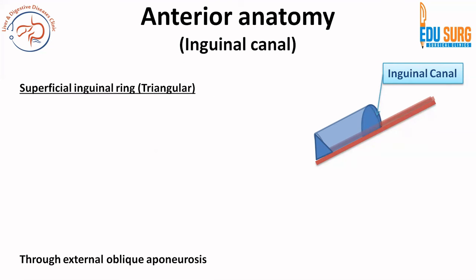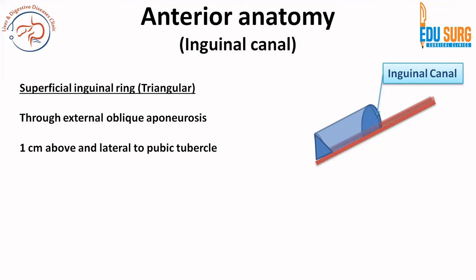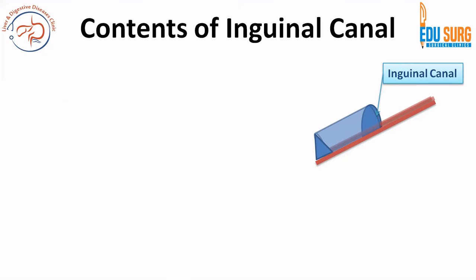The superficial inguinal ring is a triangular opening through the external oblique aponeurosis, located 1 centimeter above and lateral to the pubic tubercle. Its base is formed by the pubic tubercle, the superomedial side is formed by the external oblique aponeurosis, and the inferolateral side is formed by the inguinal ligament.